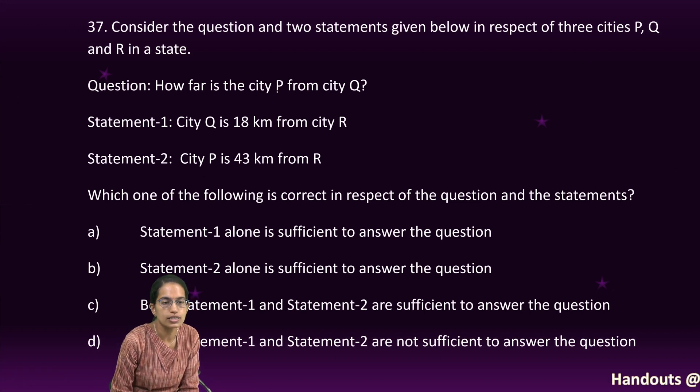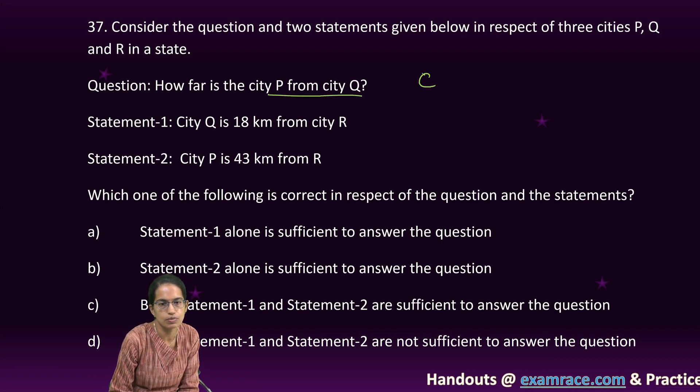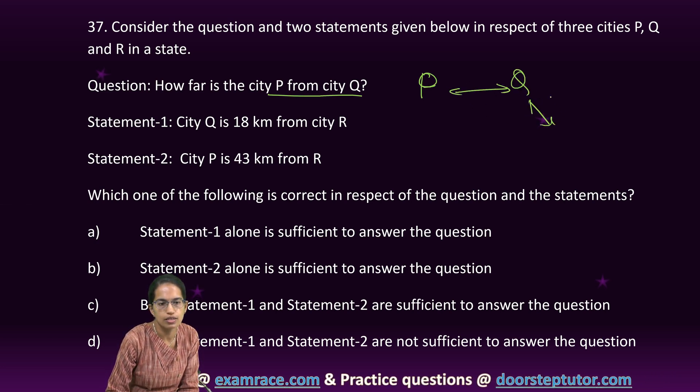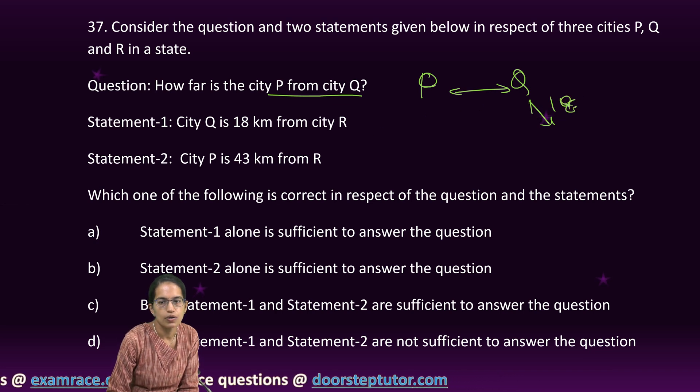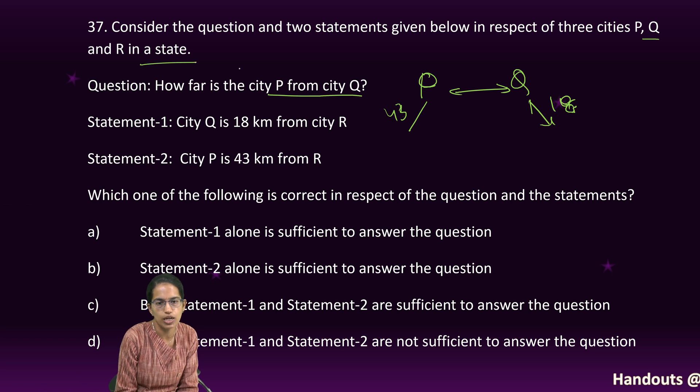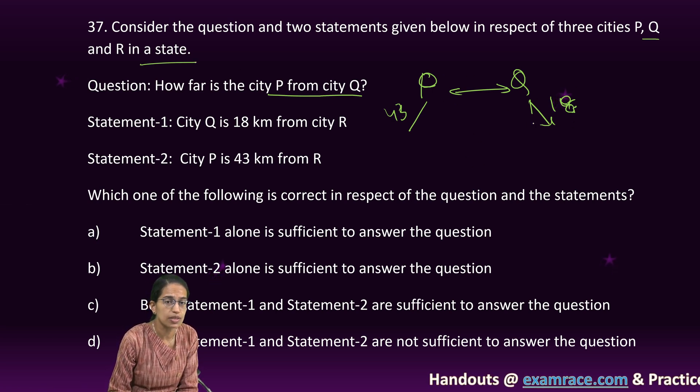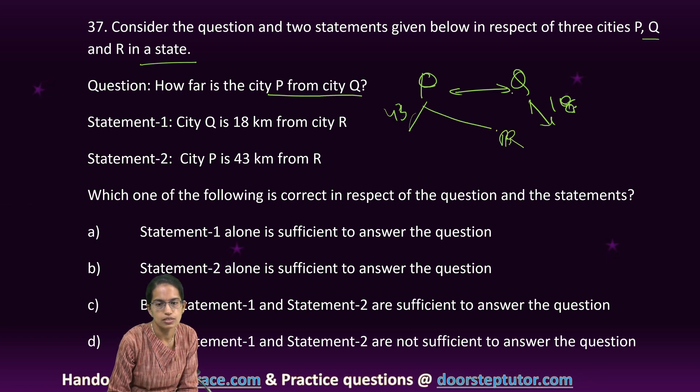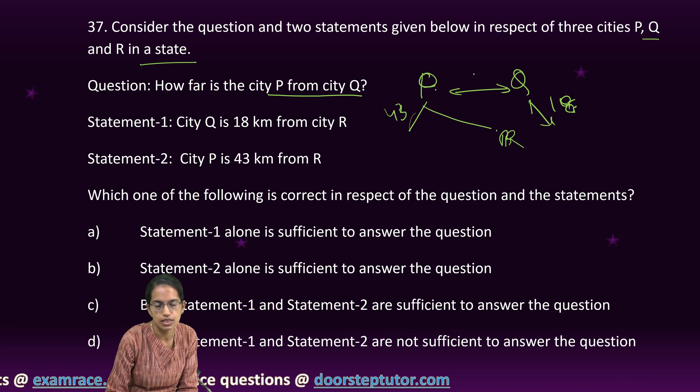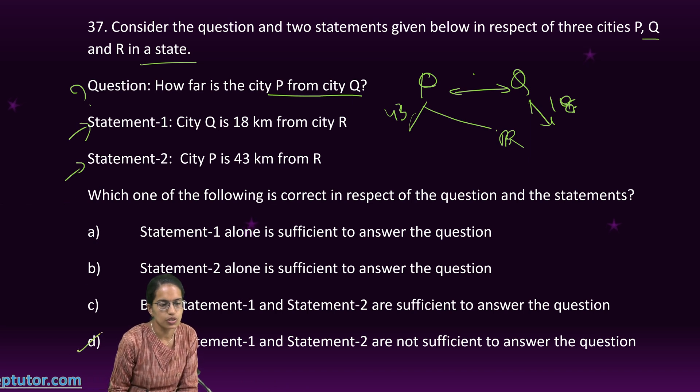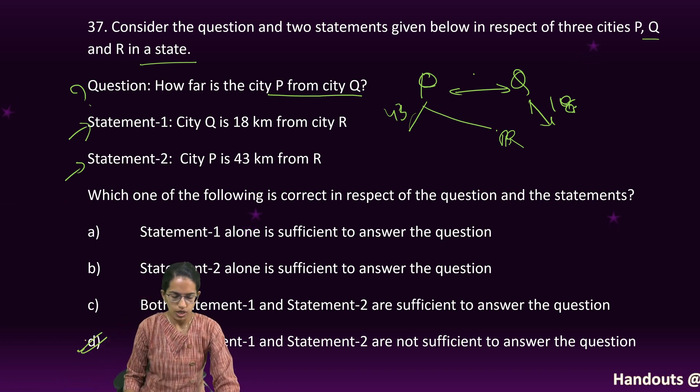The next question is how far is city P from Q? The distance from Q to R is 18 and P to R is 43. Both of these distances are immaterial because we do not know whether the cities are in a straight line or triangular position. So even with both statements, I cannot land up to the correct answer. Both statements are not sufficient.